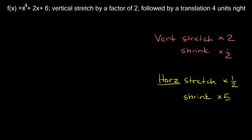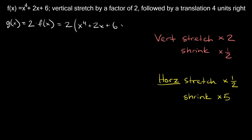So here we're going to multiply this — it says vertical stretch by a factor of two — so we're going to multiply the whole thing by two. So g of x is equal to two times f of x, and that's going to be equal to two times our whole trinomial: x to the fourth plus two x plus six. If we simplify this by just distributing, this is going to be equal to two x to the fourth plus four x plus 12. So this is what g of x is equal to now.